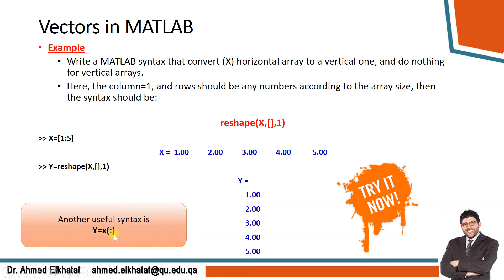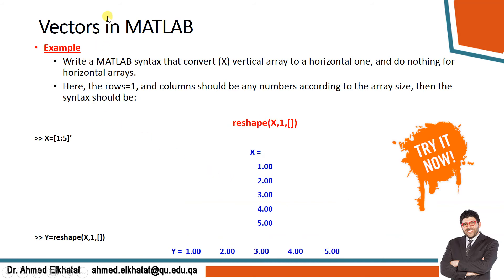Another useful syntax is the colon inside parentheses: x(:) converts a vector to vertical format. Conversely, to convert a vertical array to horizontal and do nothing if already horizontal, use reshape(x, 1, []) — one row and any number of columns. For example, if x = (1:5)' (already vertical), then reshape(x, 1, []) gives a horizontal vector y.